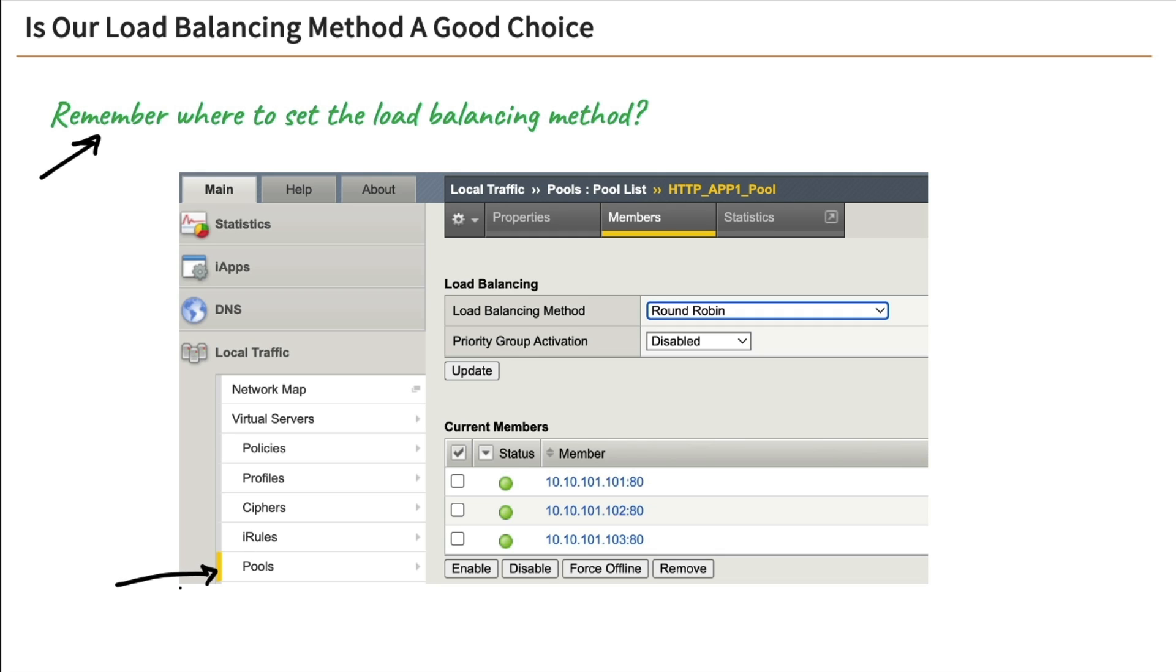We're going to select our pool and go to the members tab. And there we go. That is where we're going to set our load balancing method. Here we can see it is set to round robin.